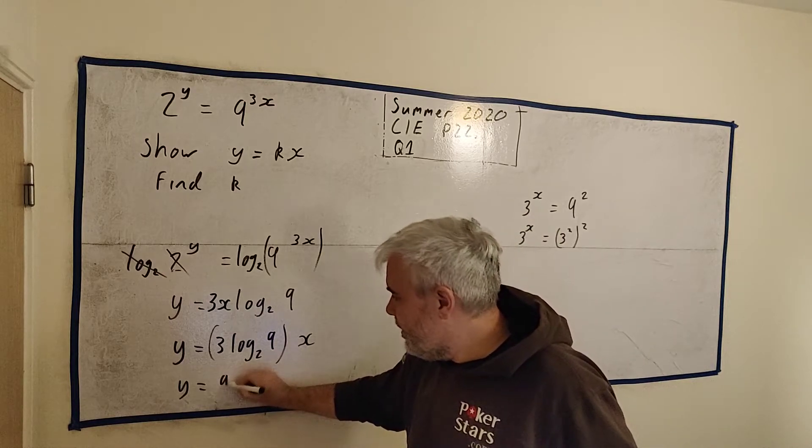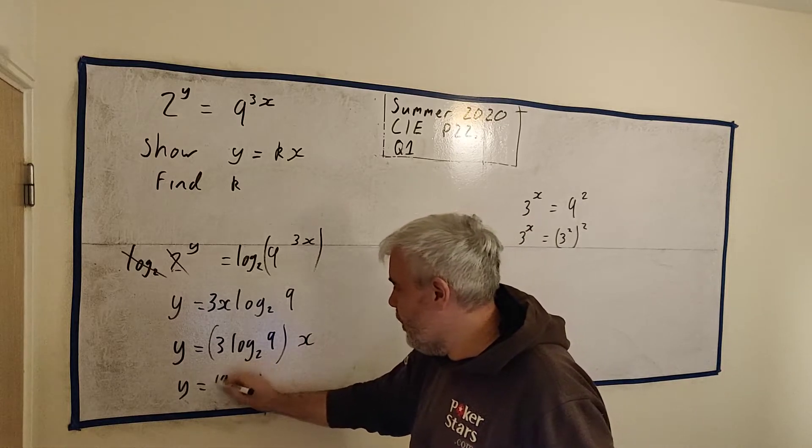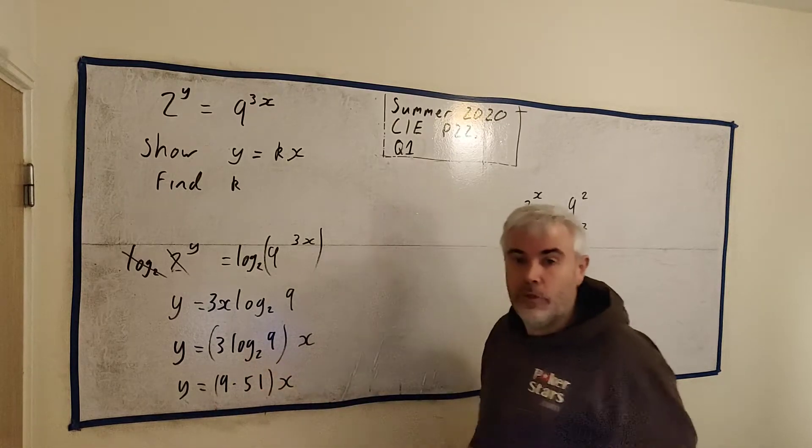Let me have a look here. It's 9.51. That's when we rounded off to three significant figures. 9.51 times x. That's our answer. That's k is equal to this.